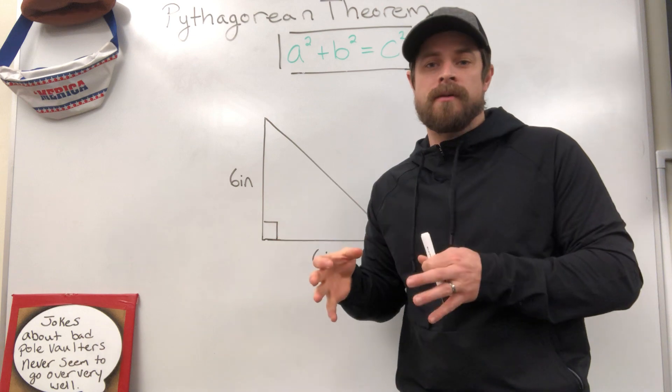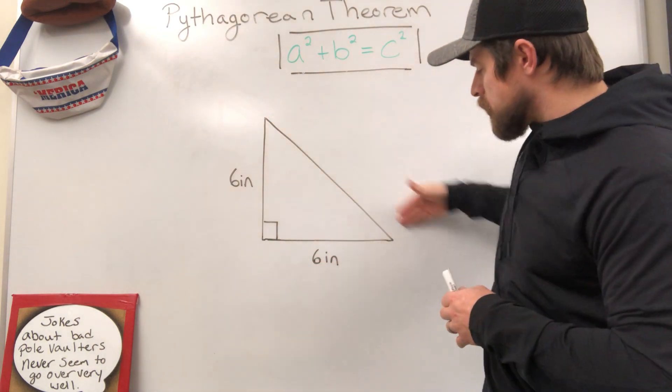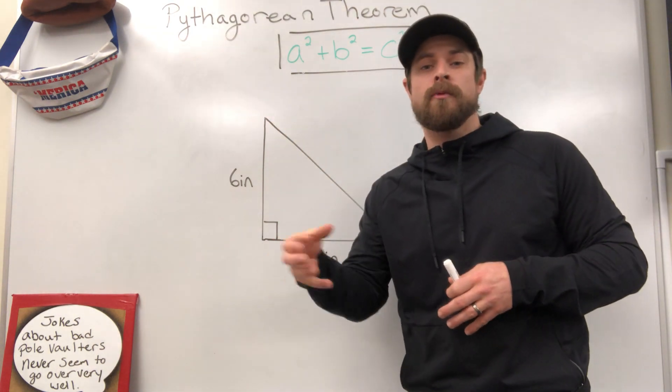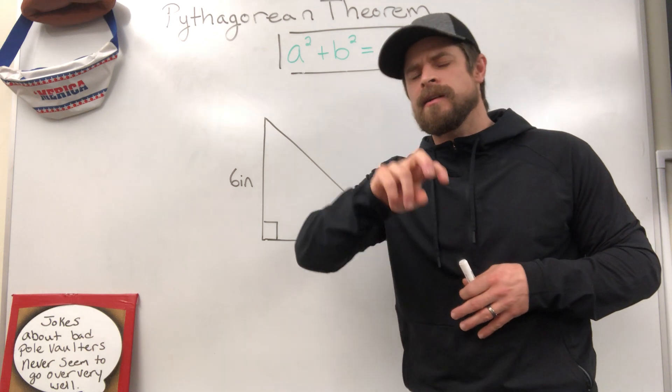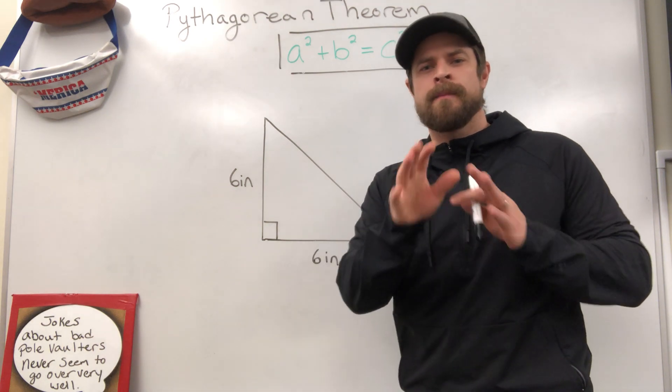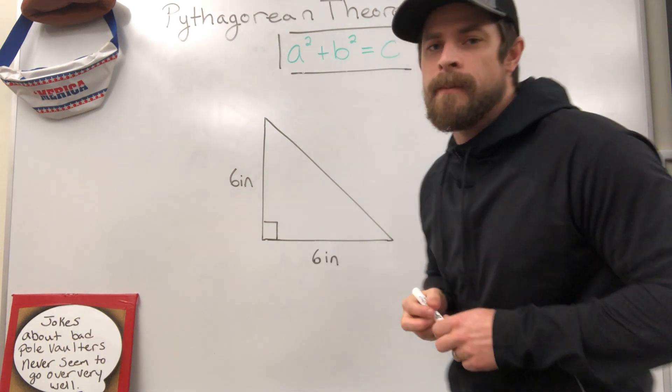And in this specific problem, the hypotenuse, the longest side, is going to come out to a radical that we need to simplify. So there's a little extra step at the end. Pay close attention. You'll be able to figure this out pretty quickly.